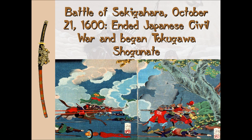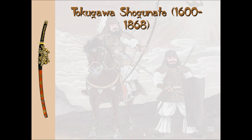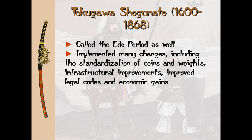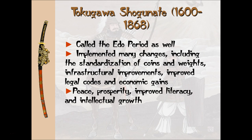Here's a turning point: the Battle of Sekigahara. This ended the Japanese civil war and began the era of the Tokugawa Shogunate, or the Edo period. Here's a primary source showing the ending of the civil war, and that ushered in a good time. The Tokugawa Shogunate lasted 268 years, also called the Edo period, with many changes — mostly positive — including standardization of coins and weights, making commerce and trade easier, infrastructural improvements like canals, roads, bridges, improved legal codes, and economic gains. Peace, prosperity, and one of the highest literacy rates in the world, with people improving their minds and creating the fruits of such intellectualism.